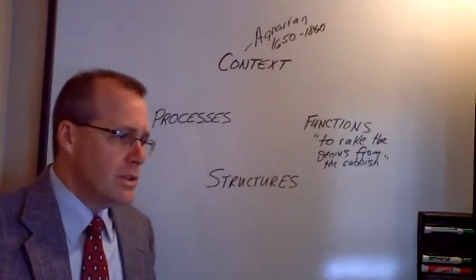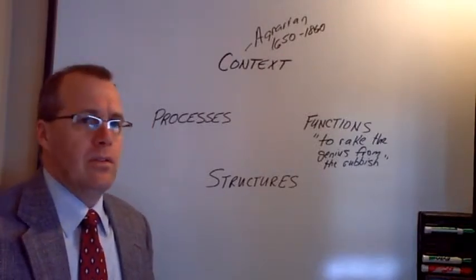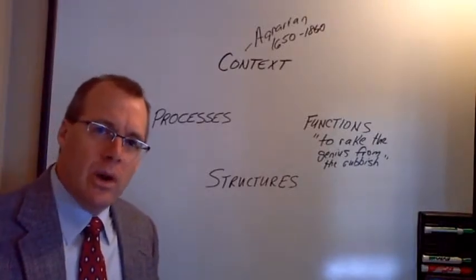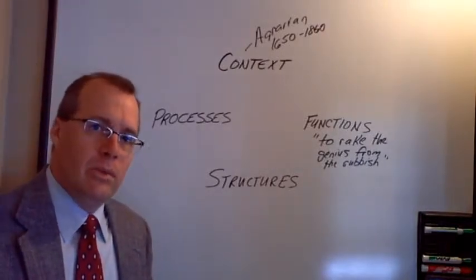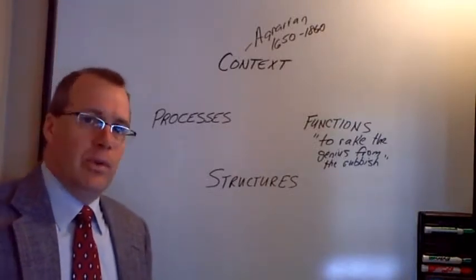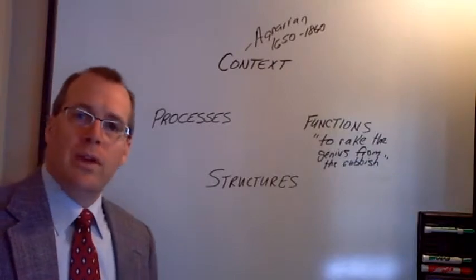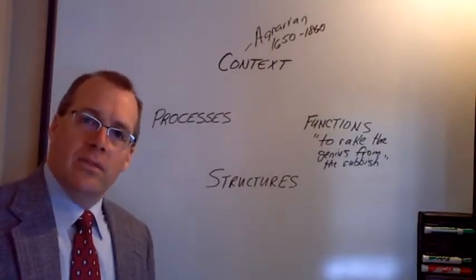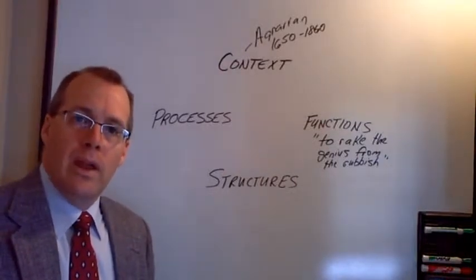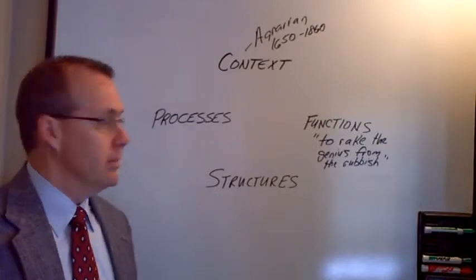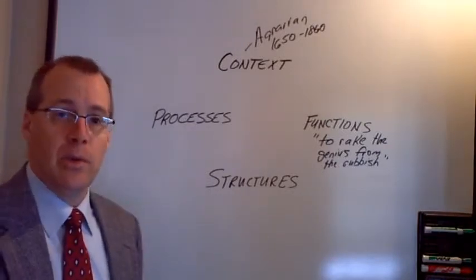So the purpose became raking the genius from the rubbish. Well, what does Jefferson mean by that? Well, what he wants to do is figure out of all the poor kids and rich kids, what's the small percentage who are really smart, really fast at learning, reading, writing, and arithmetic, and who can rise to the top and go to the colleges. All the rest of the kids can go become apprentices and artisans and craftsmen and forge a new world out there with their hands and their labor.